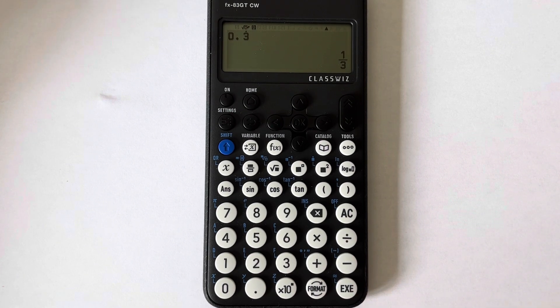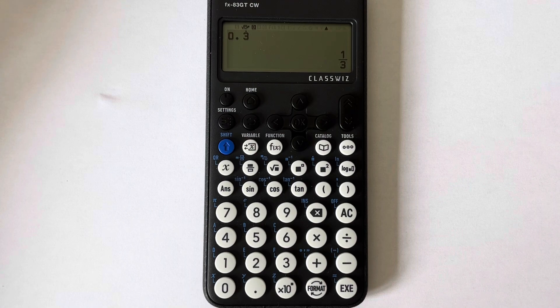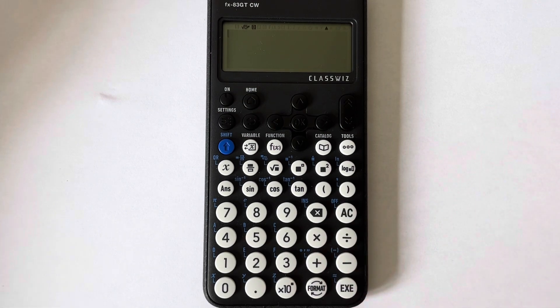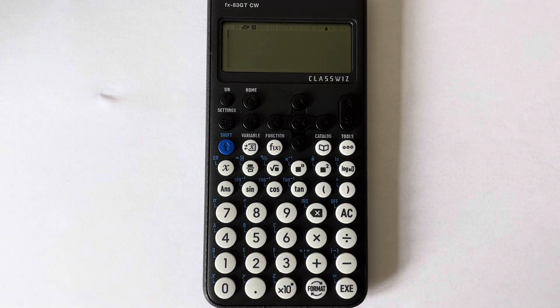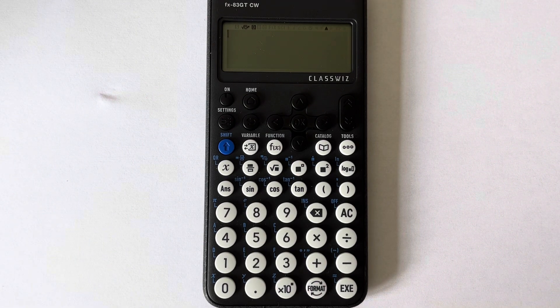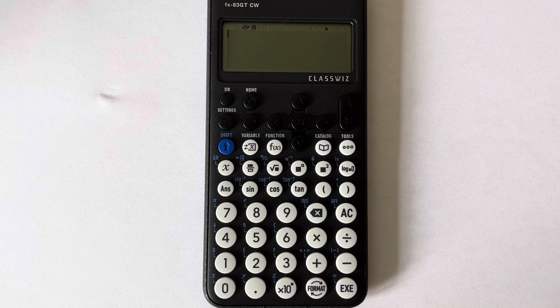Press equals and we get the answer one third. So let's do one more example. Let's do the recurring decimal 0.25252525, so that's the two and the five repeating.